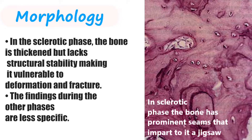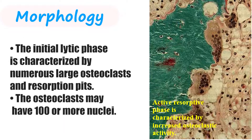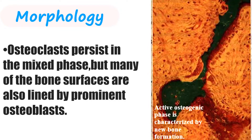The findings during the other phases are less specific. The initial lytic phase is characterized by numerous large osteoclasts and resorption pits. The osteoclasts may have 100 or more nuclei. Osteoclasts persist in the mixed phase, but many of the bone surfaces are also lined by prominent osteoblasts.